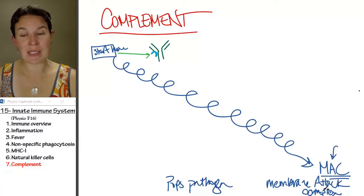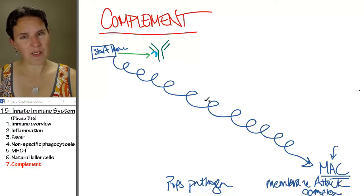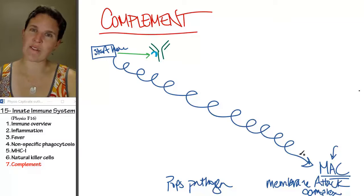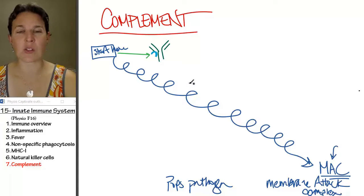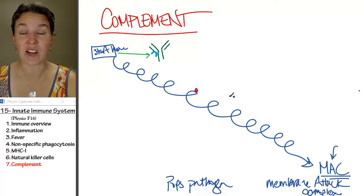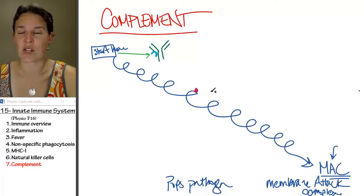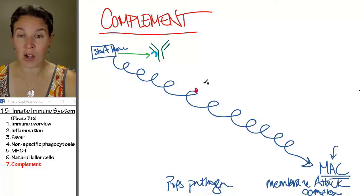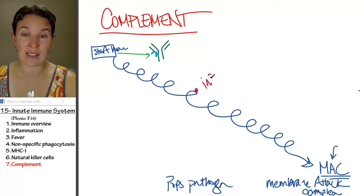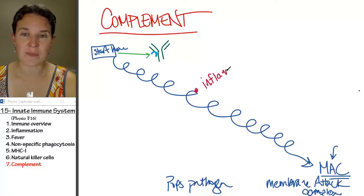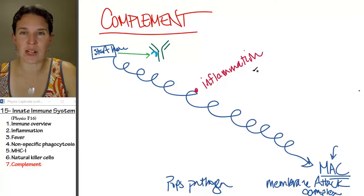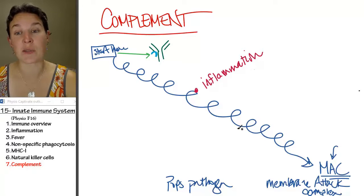The end game is this membrane attack complex, but the fact is that all these 25 intermediate chemicals along the way also have various functions. For example, some of them are inflammatory cytokines or mediators of inflammation — inflammation molecules — so they're going to initiate an inflammatory response.